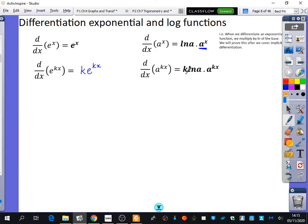So for example, if I had that y was equal to 2 to the power of x, I would get dy by dx is equal to ln 2 multiplied by 2 to the power of x.